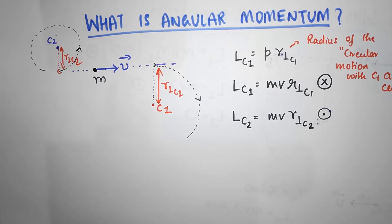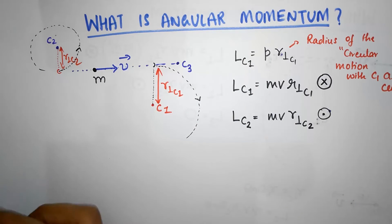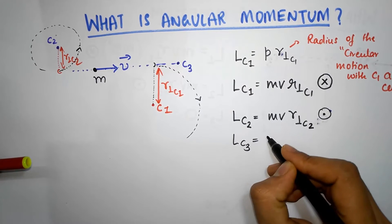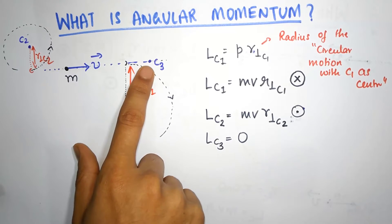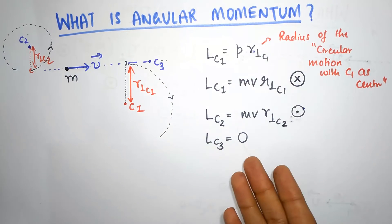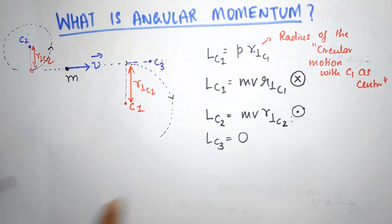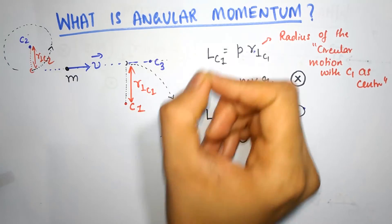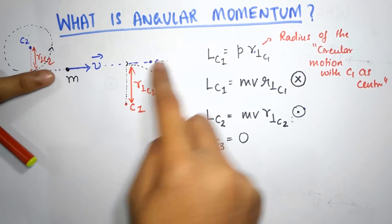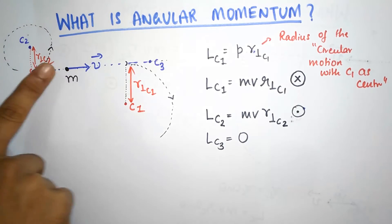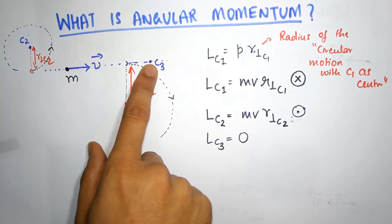Let me choose one more reference point — C3. The angular momentum with respect to point C3 is zero. There is absolutely no perpendicular distance between point C3 and the direction of motion, and therefore angular momentum is zero. In fact, angular momentum with respect to any point lying on the line along which the particle is moving would be zero. You can imagine in terms of the string: if the particle attaches right along its direction of motion, it has no tangential component and will not go in any circular motion.